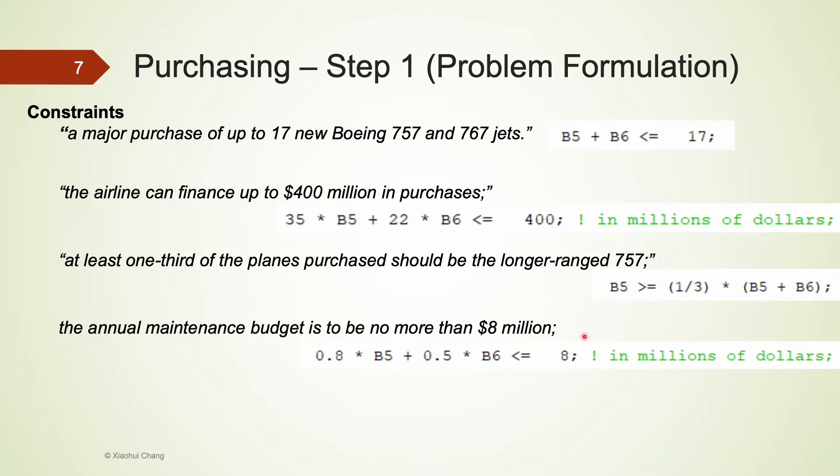The last constraint requires that the annual maintenance budget is to be no more than 8 million dollars. We first calculate the annual maintenance for both types of planes, sum them up, and make sure it is less than 8.